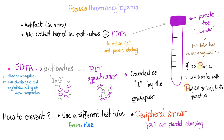The pseudo — the fake thrombocytopenia — is an artifact. We collect blood in a test tube. If the top is purple, it has an anticoagulant in it. In the lab they call it the lavender tube. When I first came to the United States, I didn't know what lavender was, and the lab technicians made fun of me. I discovered that lavender is the same as purple — it comes from a flower called lavendula. Never make Medicosis angry. Just kidding.